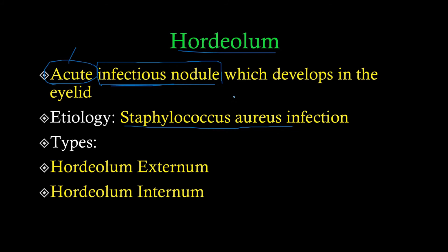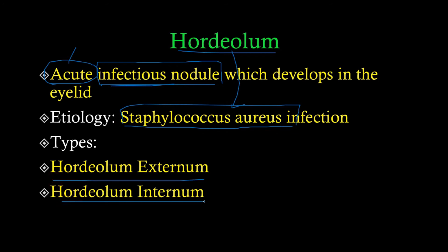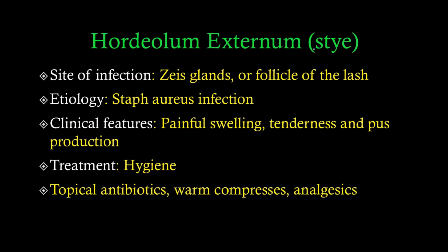Hordeolums are caused by Staphylococcus aureus bacteria, one of the most common bacteria found on the skin. Since the eyelid is skin, if the defenses are compromised — for example in an immunocompromised patient — staph aureus can attack and cause infection. There are two types: hordeolum externum and hordeolum internum.